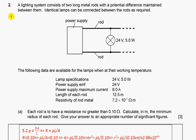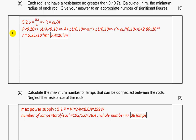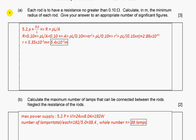Question two: A lighting system consists of two long metal rods with potential difference maintained between them. Identical lamps can be connected between the rods as required. Each rod is to have a resistance no greater than 0.10 ohms. Calculate in meters the minimum radius required.